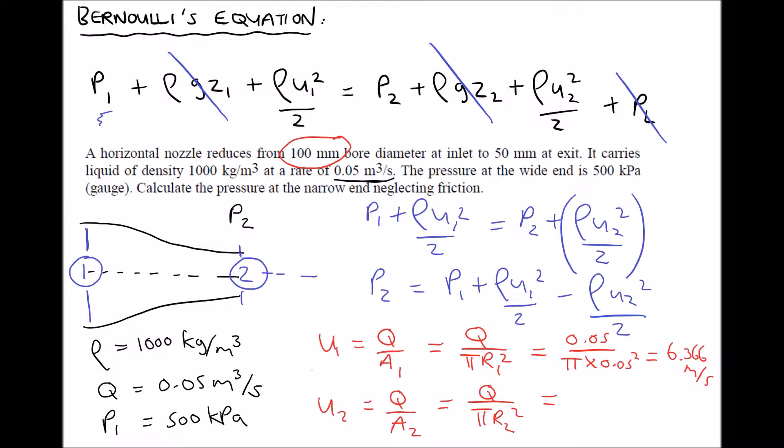And repeating for u₂, we have 0.05 for the volume flow rate, divided by π times radius 2 squared. Well, the diameter at position 2 is 50 mm, meaning the radius is 25 mm. Dividing by 1000 to get meters is just 0.025. Square that. And again, that's meters per second.